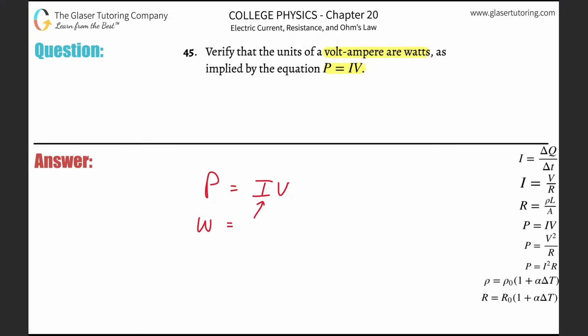The unit for current is in amperes, the unit for voltage is in volts. So we have to deconstruct this to show W equals that side.